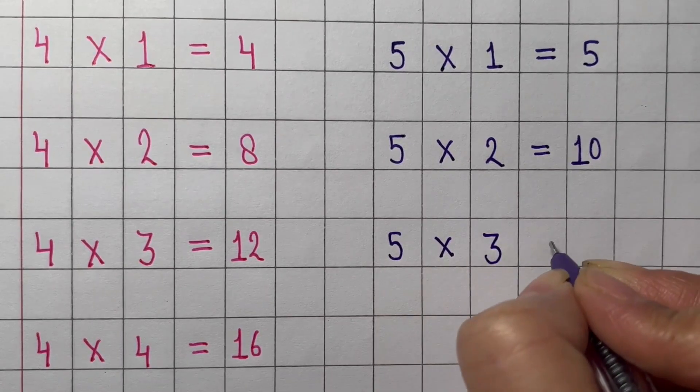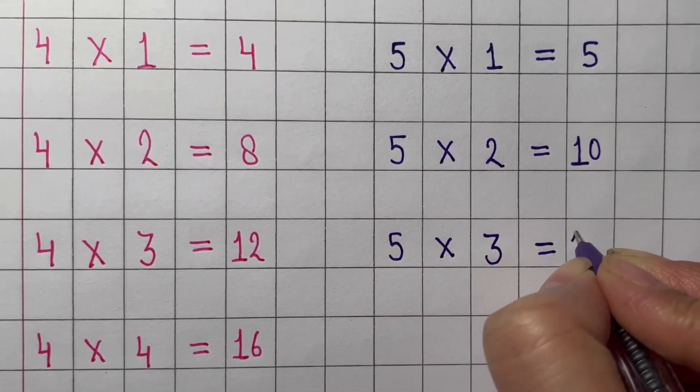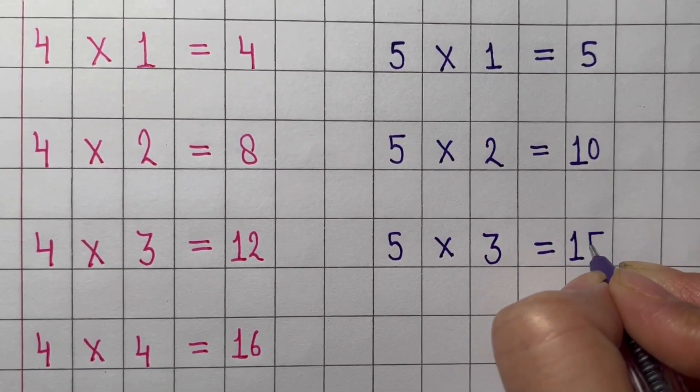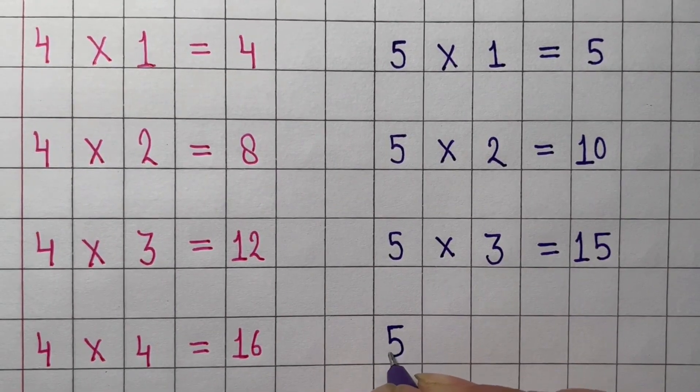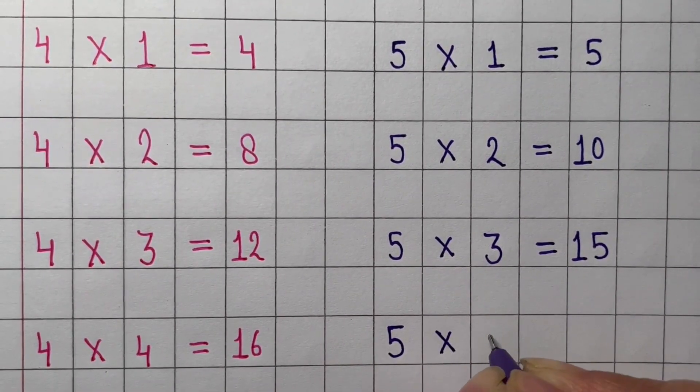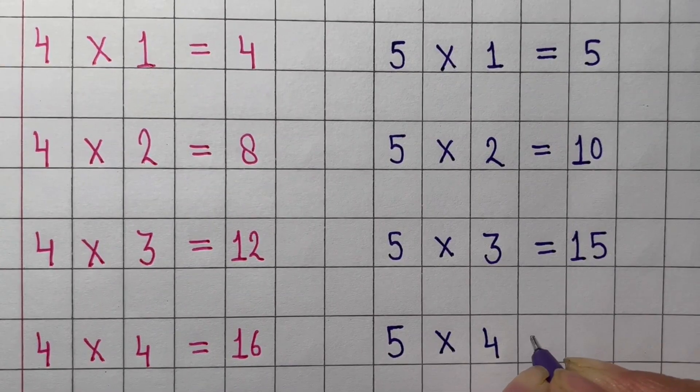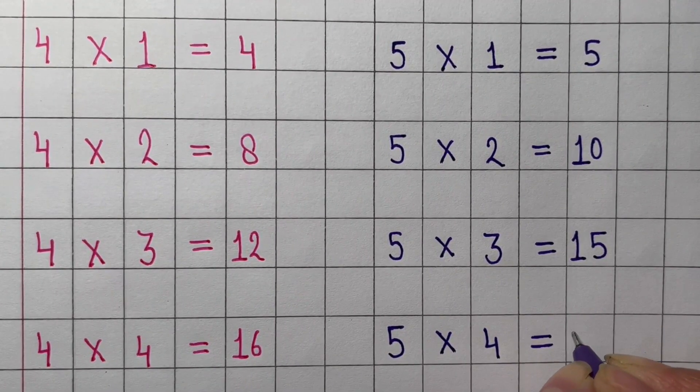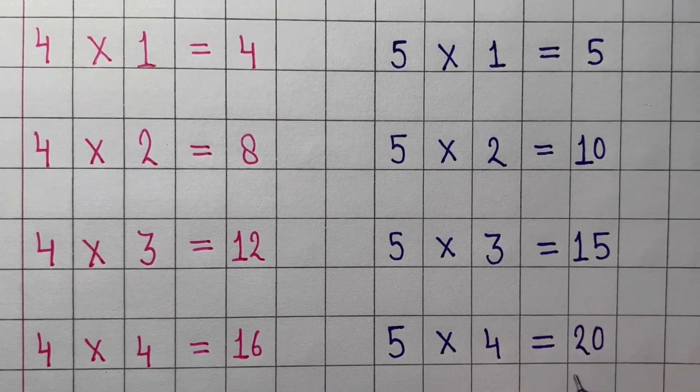Three times 5 equals 15. Three times 5 equals 15. Four times 5 equals 20.